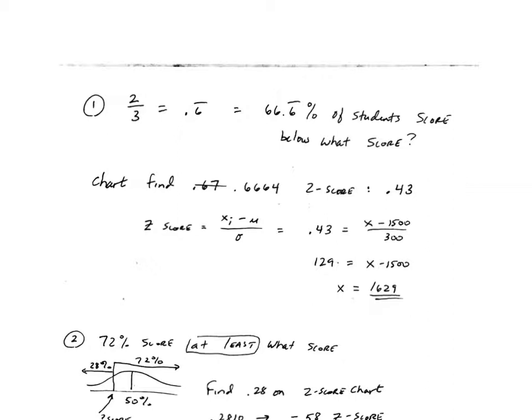On the first problem I asked what the SAT score was that two out of every three students who take the test end up scoring below. So if two out of three students are scoring below it, that means 66.6 repeating percent of students score below this SAT test score.